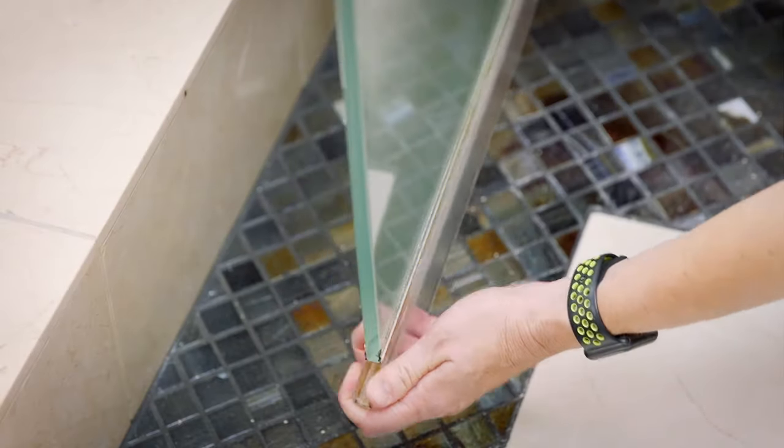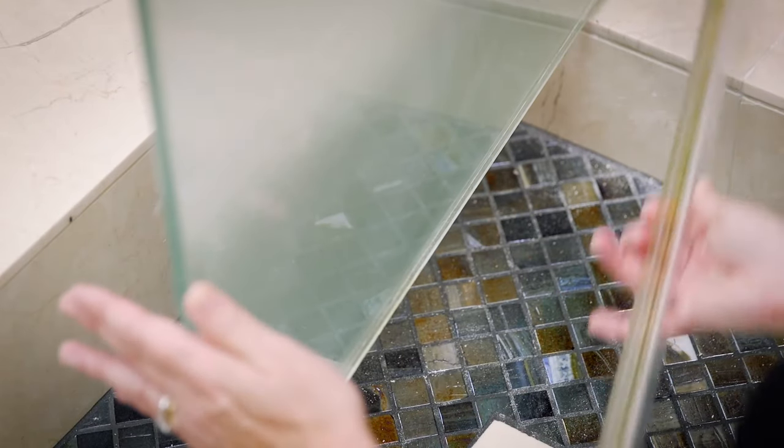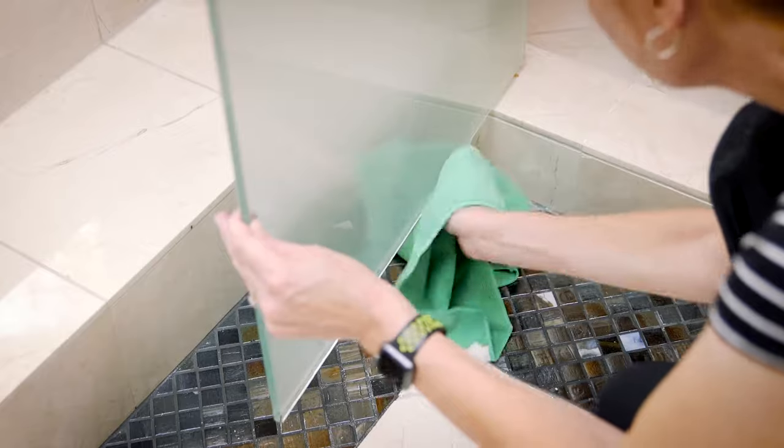If you already have an old existing sweep on your door, gently pull down on the sweep to loosen it from the door and to remove it entirely.